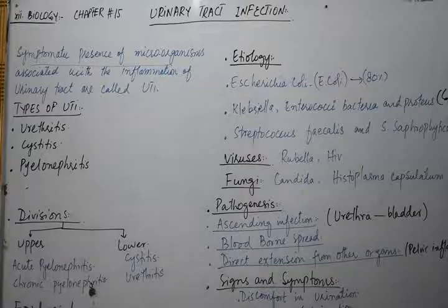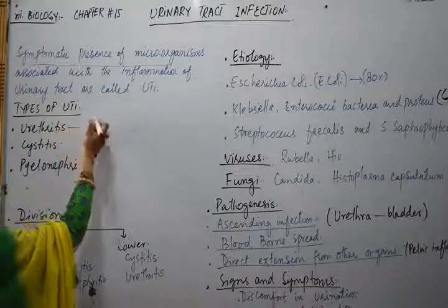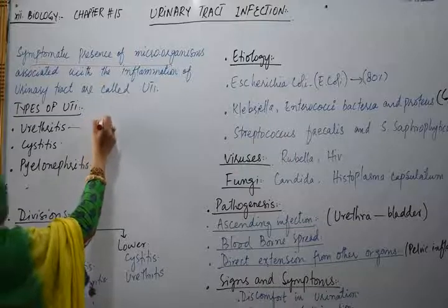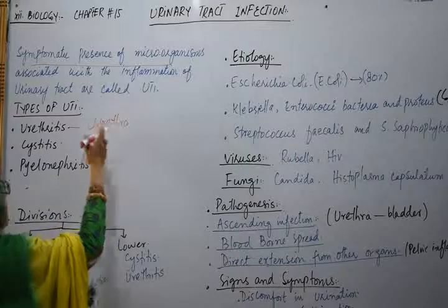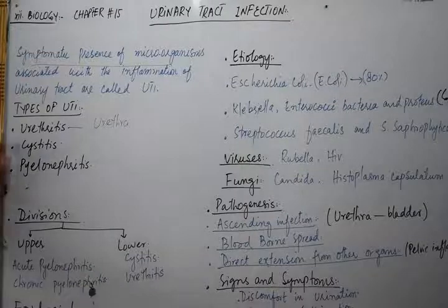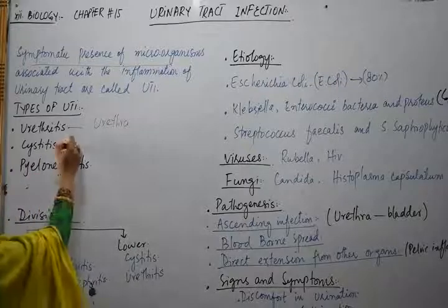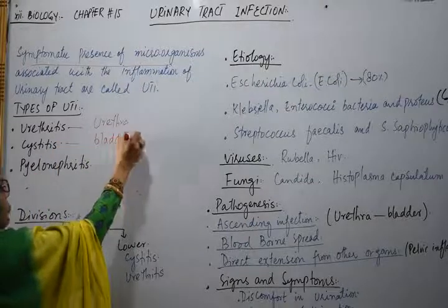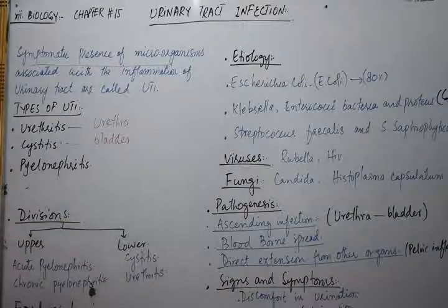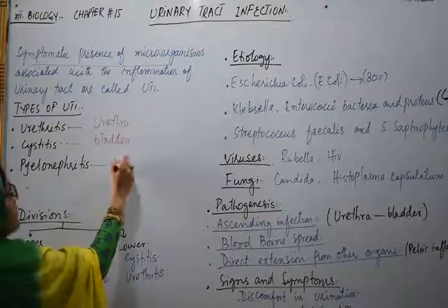There are different types of UTI based on the parts of the urinary tract — kidney, ureter, bladder, and urethra. The first type is urethritis, which is inflammation of the urethra caused by microorganism infection and toxin production. If inflammation takes place inside the bladder, it is called cystitis. And if inflammation takes place inside the kidney, it is called pyelonephritis.